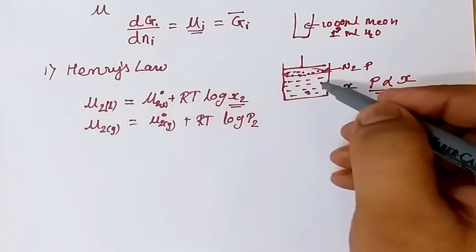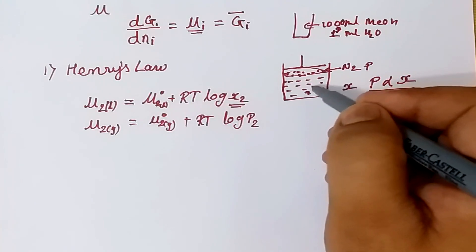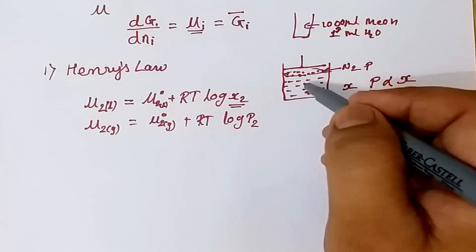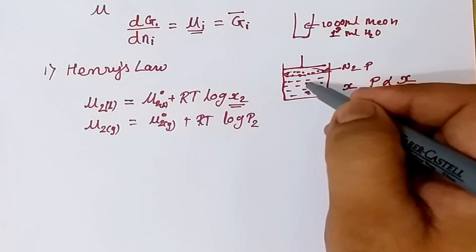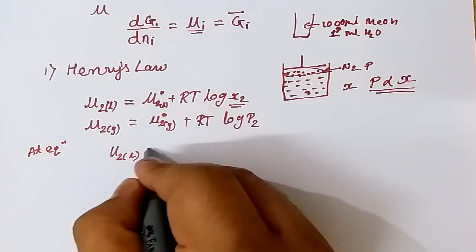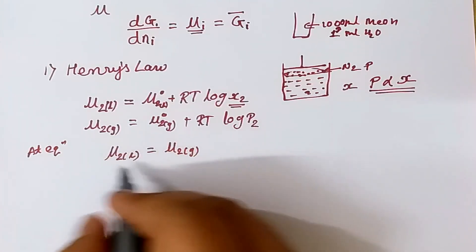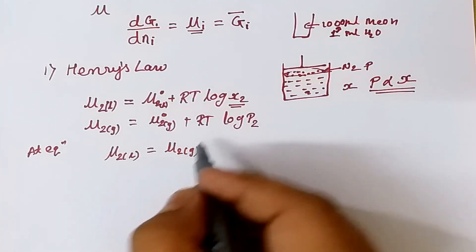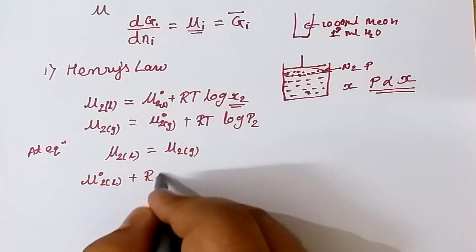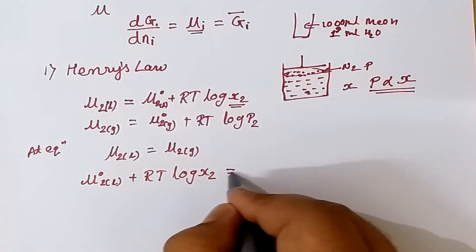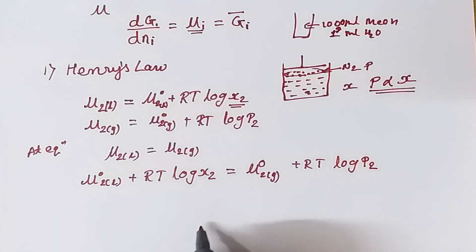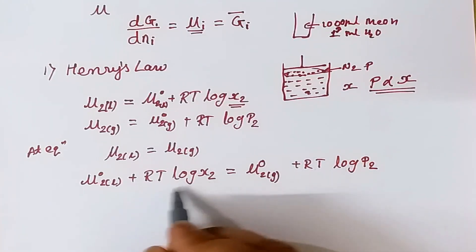At equilibrium, the chemical potential of the same constituent in both phases is always equal. So we can write μ₂ˡ = μ₂ᵍ. Equating both expressions: μ°₂ˡ + RT ln(x₂) = μ°₂ᵍ + RT ln(p₂). We now rearrange this relation in the form of ln(x₂).